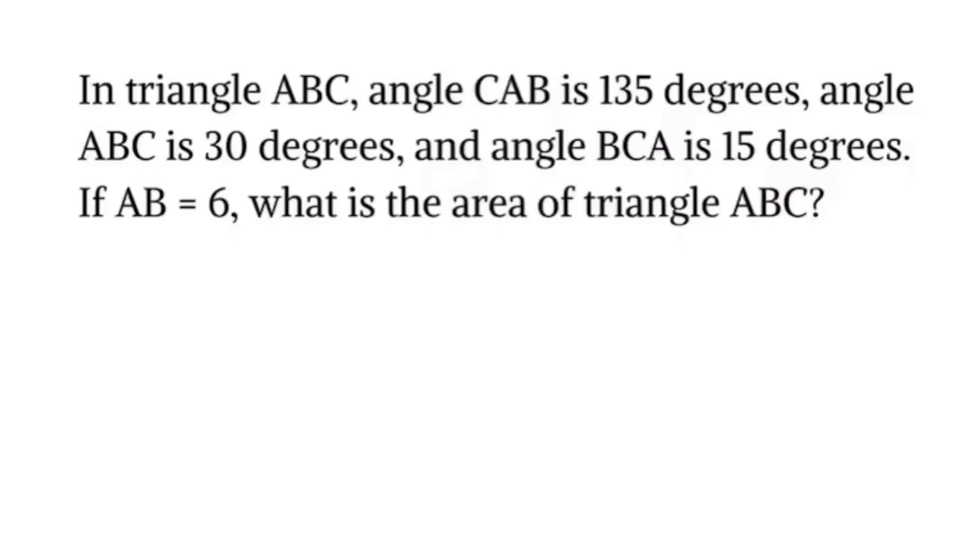Thank you to Mehek who suggested this question, let's jump right in. In triangle ABC, angle CAB is 135 degrees, angle ABC is 30 degrees, and angle BCA is 15 degrees. If AB is equal to 6, what is the area of triangle ABC?